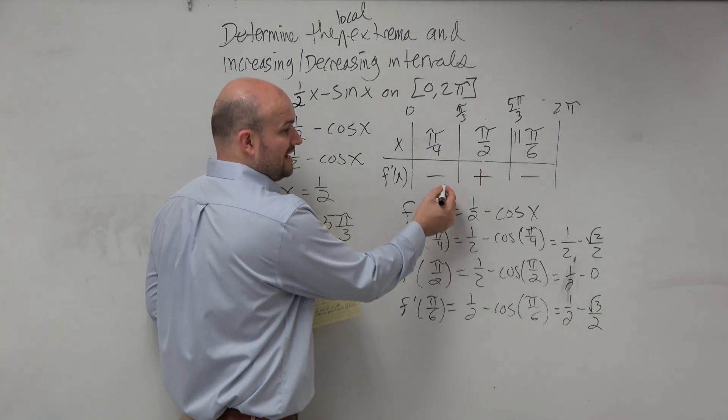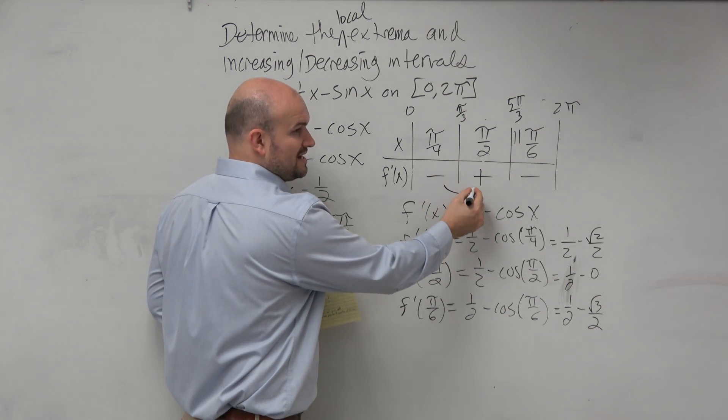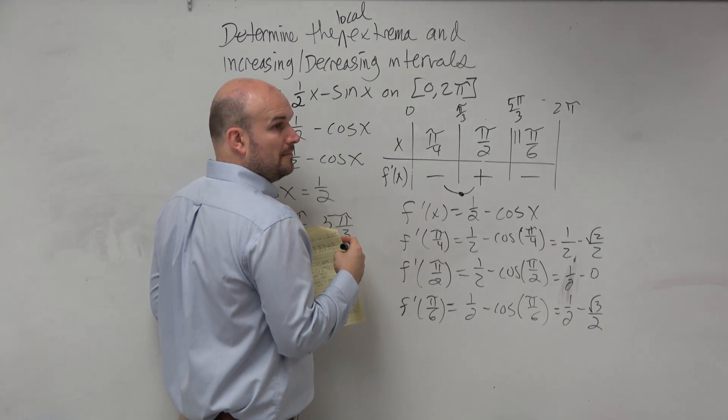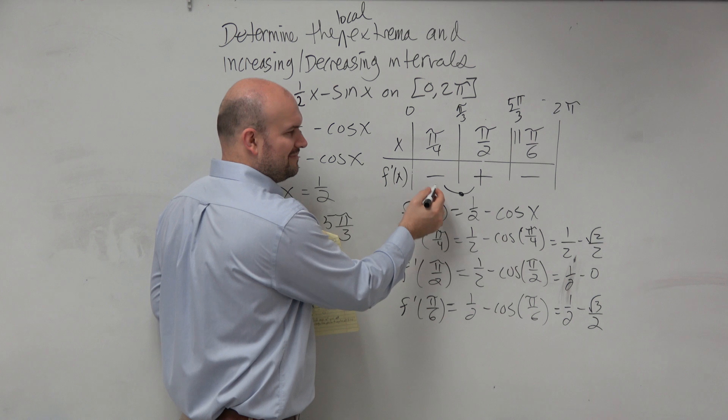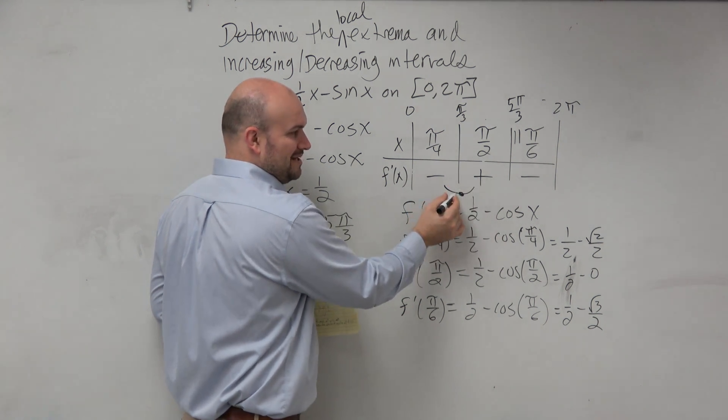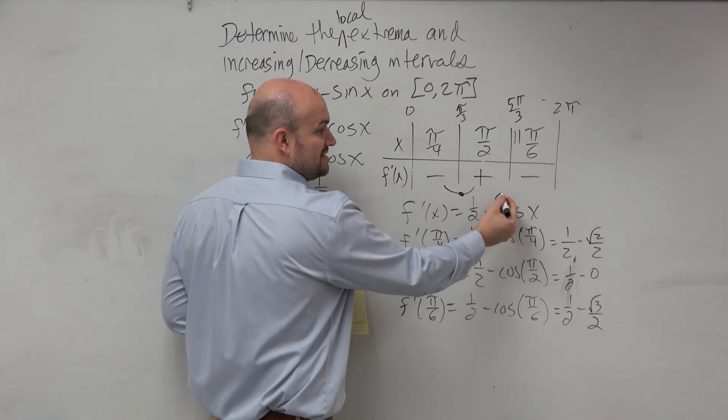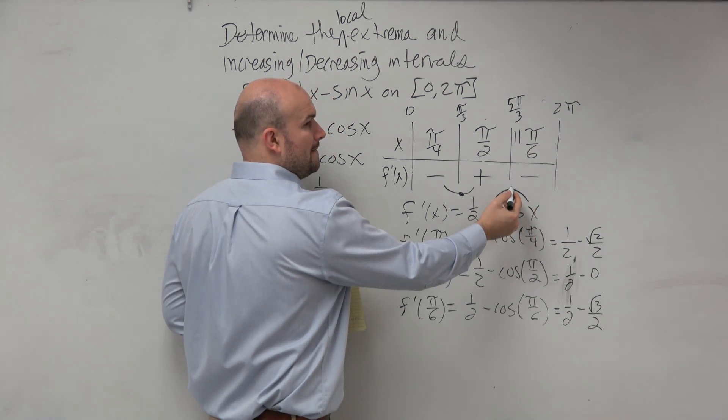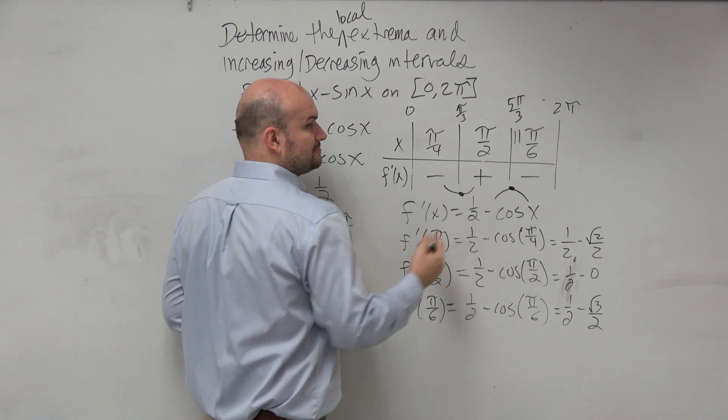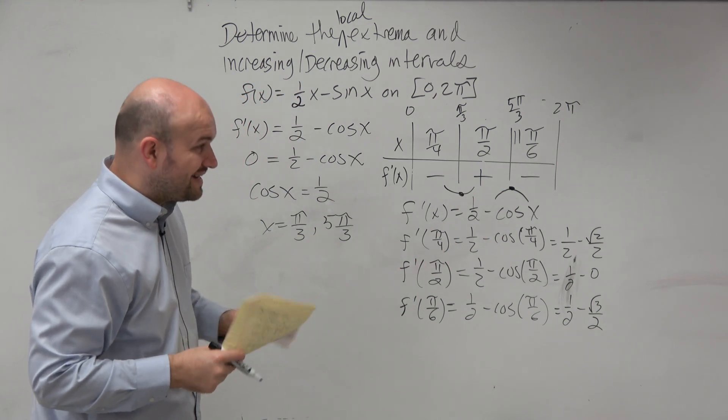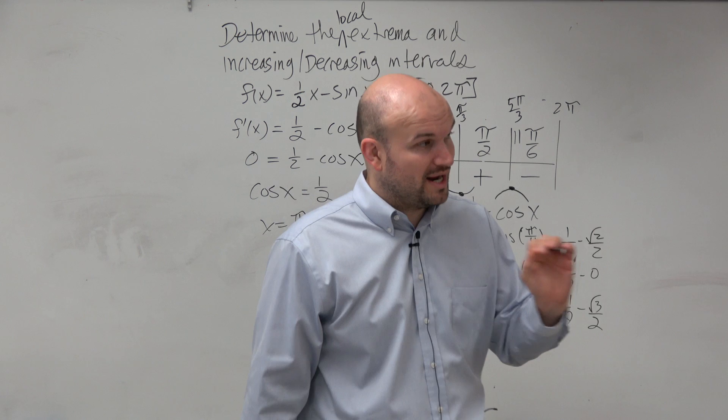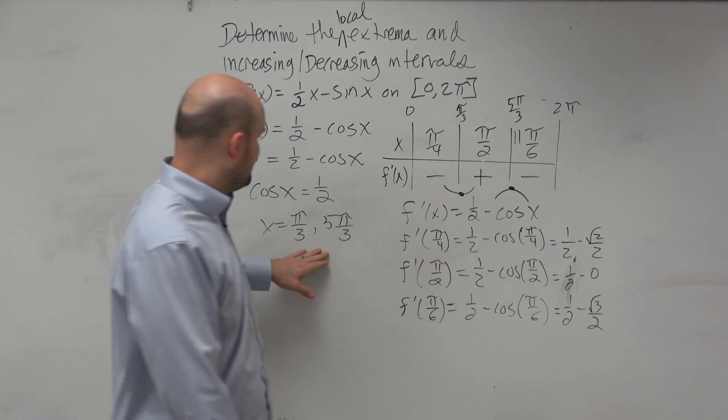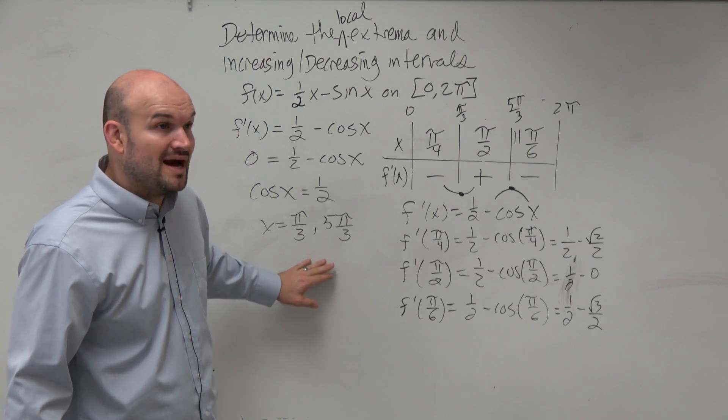So again, now we've got to think about this. We have a negative slope, and then we change to a positive slope. That means that's going to be a negative to a positive minimum value. We change from a positive slope to a negative slope. So therefore, this is a max. So again, now it's very important. When we're writing this out, we just can't say you have a maximum in here.